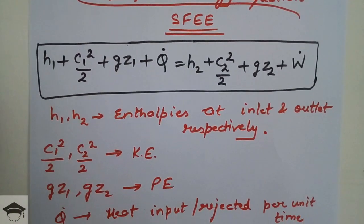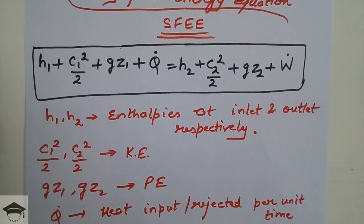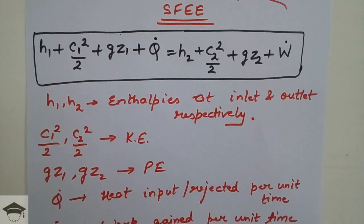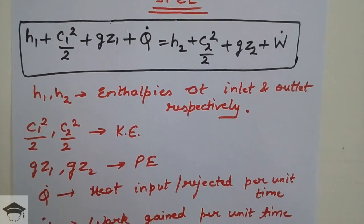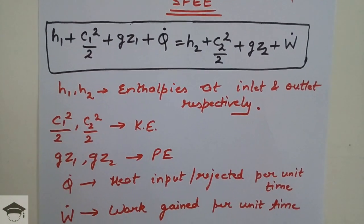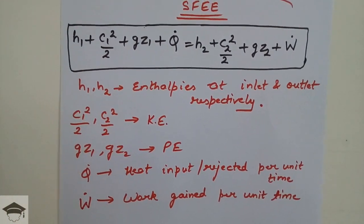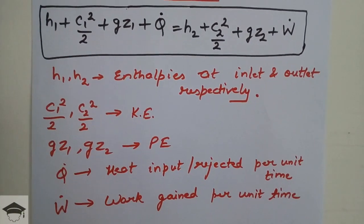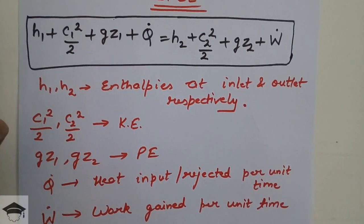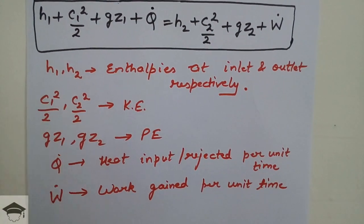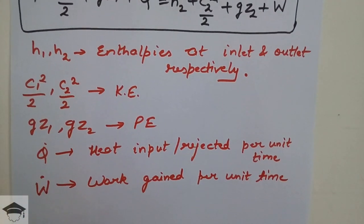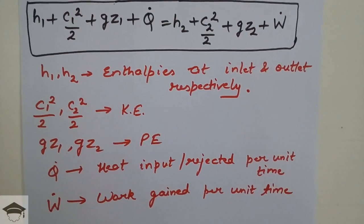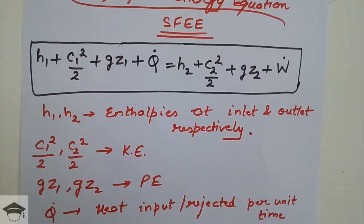Here h1 and h2 denote the enthalpies at inlet and outlet respectively. The terms c1² / 2 and c2² / 2 denote the kinetic energy at inlet and outlet respectively. gz1 and gz2 represent the potential energy at inlet and outlet respectively. Q̇ is the heat input or heat rejected per unit time, and Ẇ is the work gained or work output per unit time. This is the general SFEE.